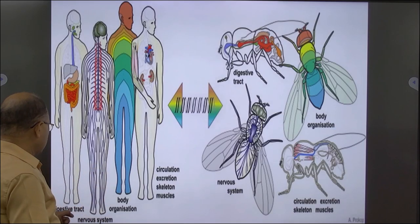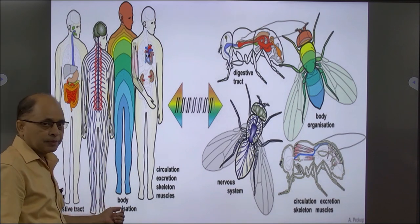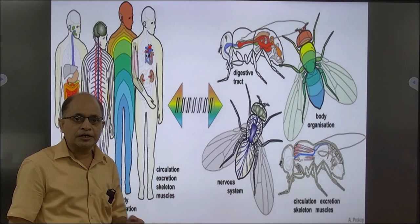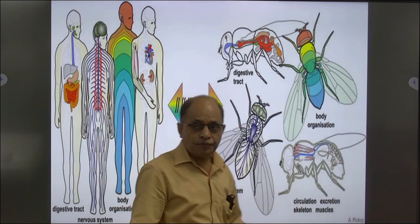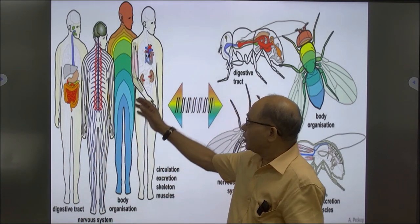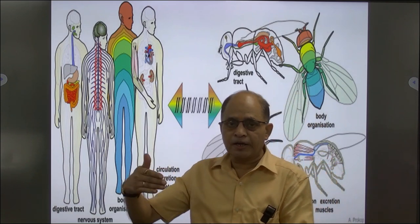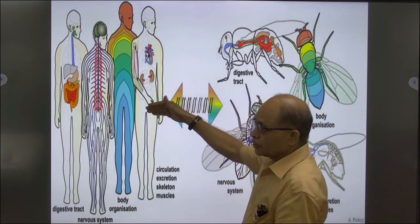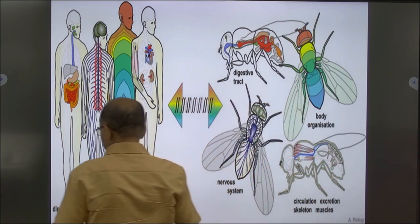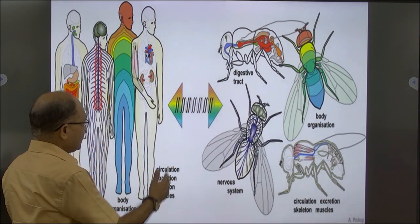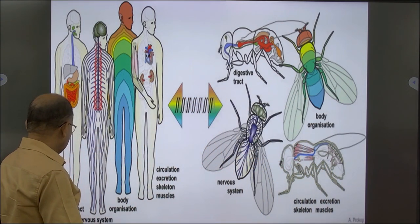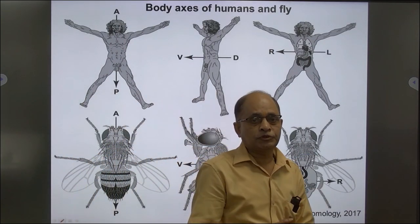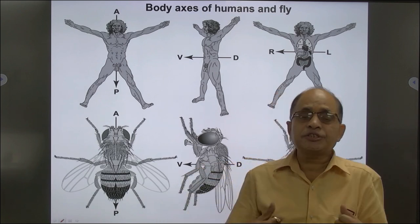If you see the digestive tract, nervous system, body organization, circulation, excretion, and skeleton or muscle systems in flies — these have been compared with the human model in color-coded form and they are very much similar.